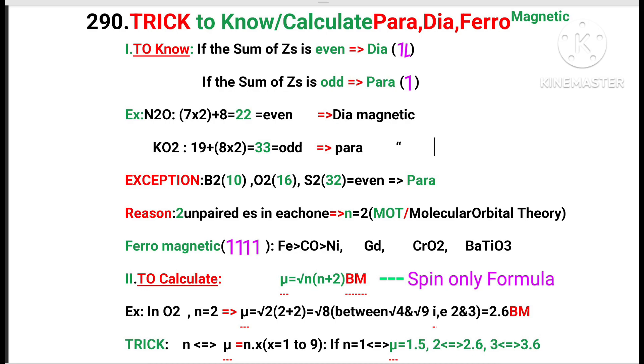Trick: Here, if n is known, μ can be calculated, or if μ is known, n can be calculated, without solving or substituting in the given formula. That is, if there are n unpaired electrons, magnetic momentum μ equals n.x, where x ranges from 1 to 9.